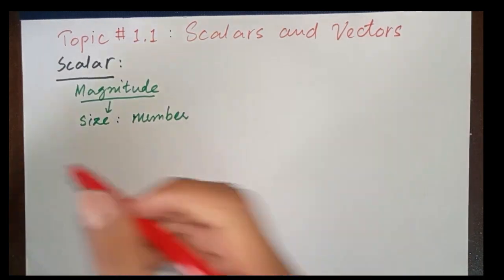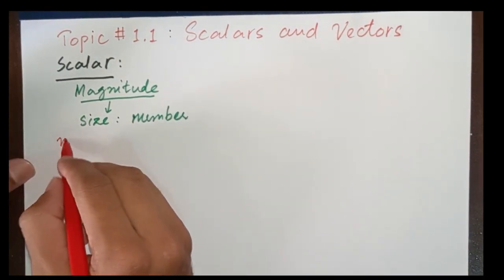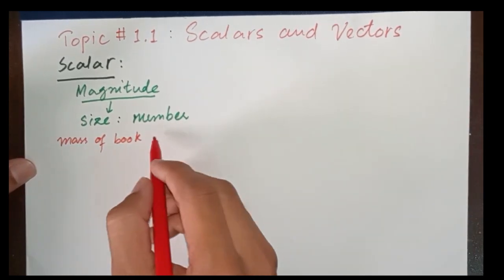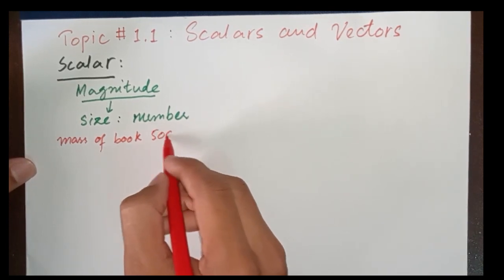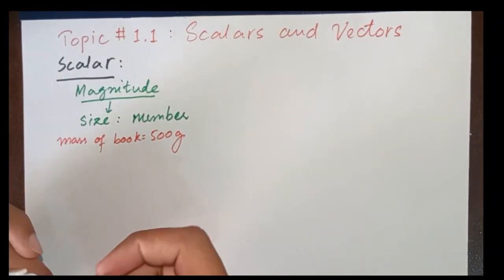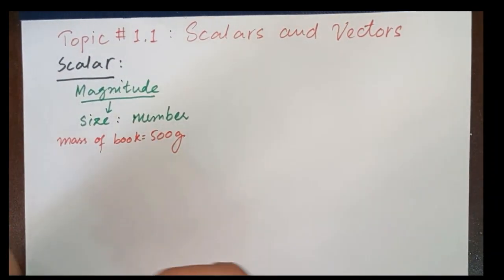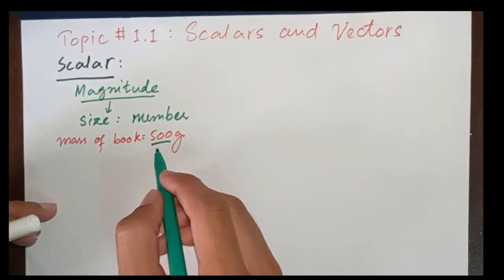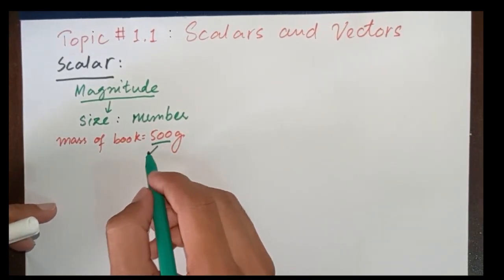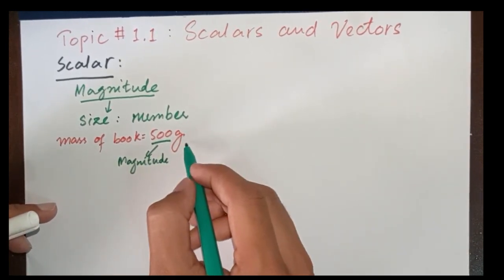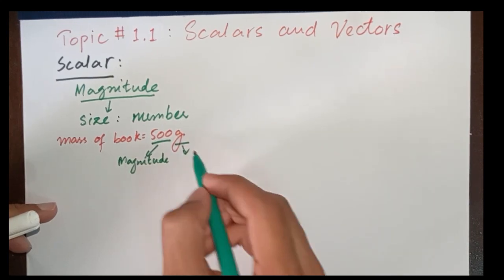For example, mass of a book, that is you can say 500 grams. So in this calculation, the value 500 is the magnitude and its unit is gram.